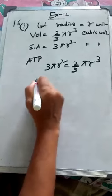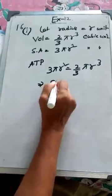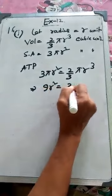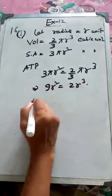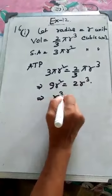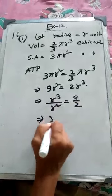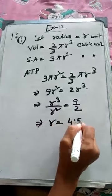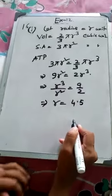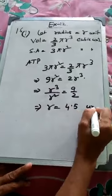Now π is crossed from both the sides. So 9 R² is equal to 2 R³. Now R is equal to R³ by R² is equal to 9 by 2, or R is equal to 4.5.